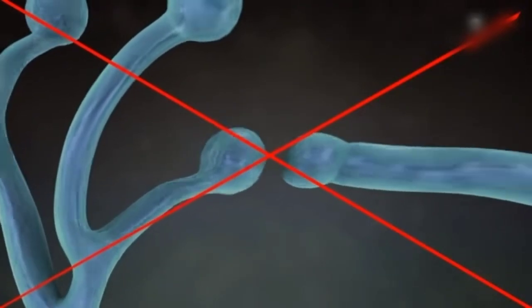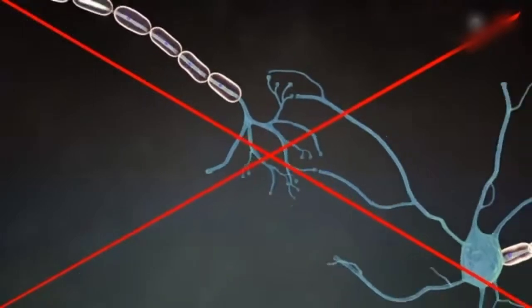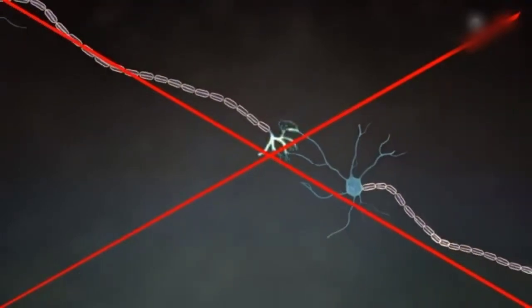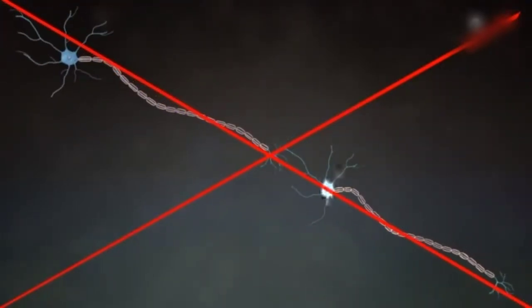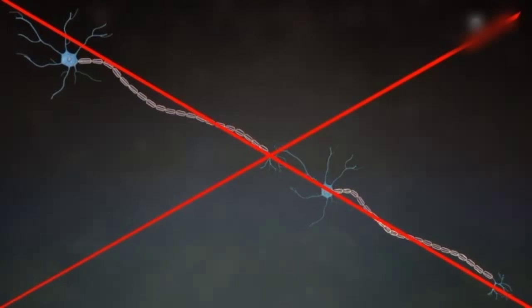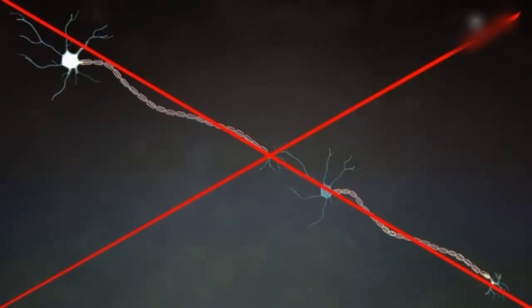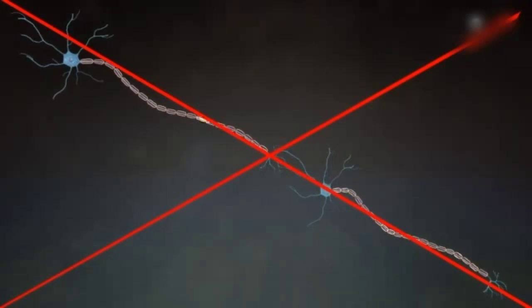Thus, the information is received by the dendrites and is then sent out through the axon to the neighboring cell. This is how information is transmitted from one cell to another.